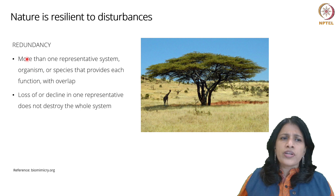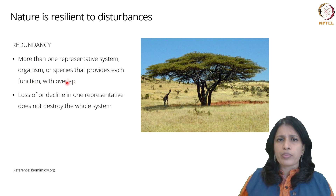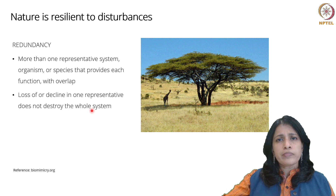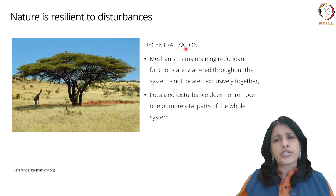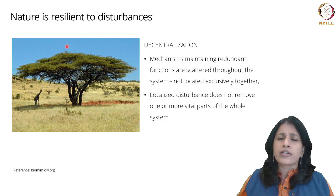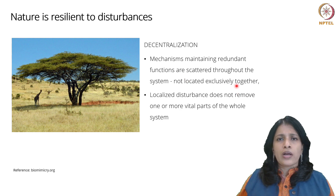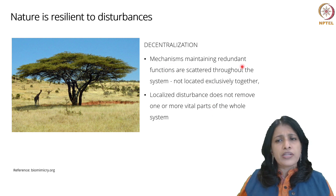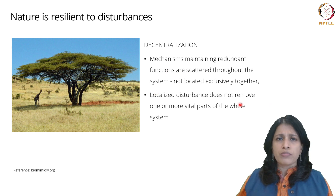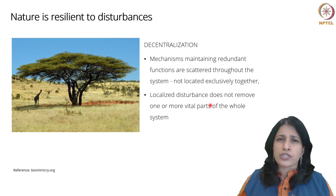The second mechanism is redundancy — in a system, more than one organism or species provides a function with some overlap, so that if one representative is lost, the entire system is not destroyed. The third is decentralization — the mechanisms that maintain redundant functions are not located in one place; they are spread throughout the system so that a disturbance in one local area does not affect the entire system. These three mechanisms — diversity, redundancy, and decentralization — work together to enable resilience.